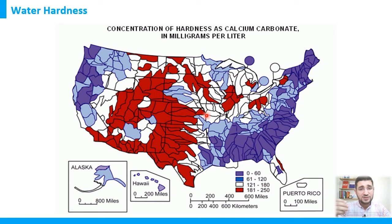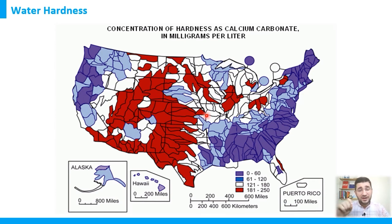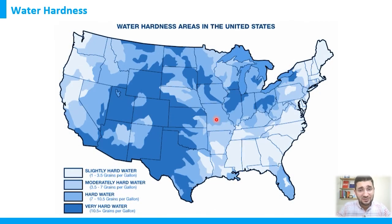There is no rule of thumb for expected hardness when extracting well water from different parts of a country. It depends on geographical location, depth of the well, underground reservoir presence, and local geology. This same principle applies worldwide — whenever we extract groundwater, we must analyze its hardness and not assume it matches nearby wells.